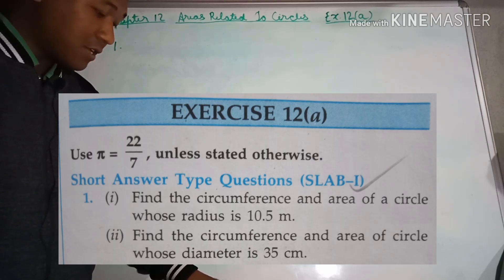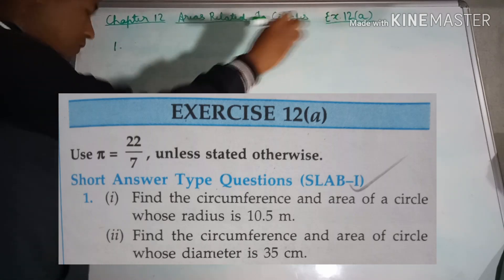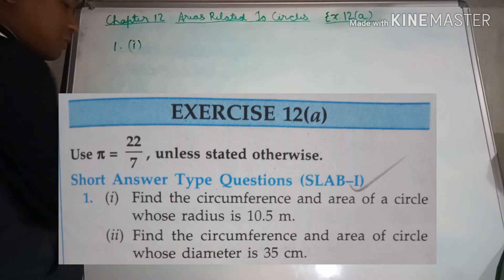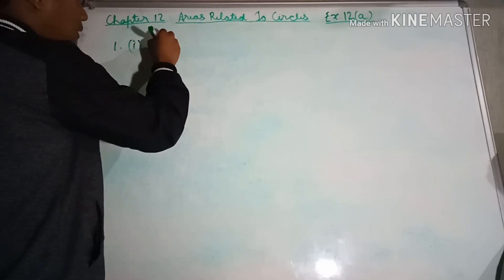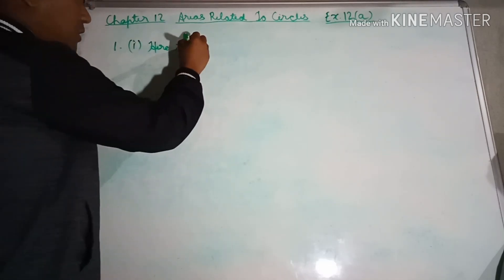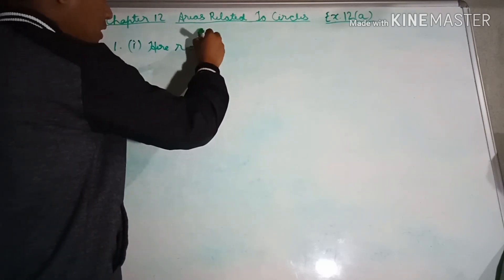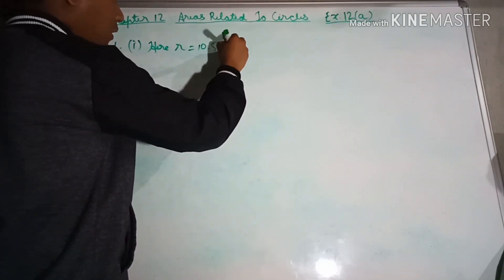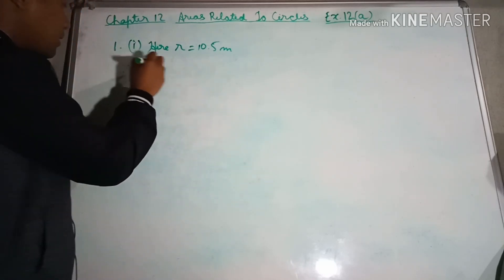Question number 1, sub number 1: Find the circumference and area of a circle whose radius is 10.5 meters. Use π = 22/7 unless stated otherwise. Here, r, the radius, equals 10.5 meters.